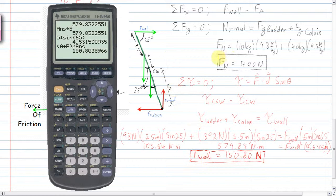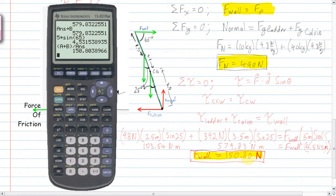So we have our answer for the normal force from the Y equation, highlighted in yellow, which we'll use in a moment. The sum of the X's gives us the wall-equals-friction result, the sum of the Y's gives us the normal force of 490 Newtons, and this is our answer to the first part of the question: the force from the wall is 150.8 Newtons.